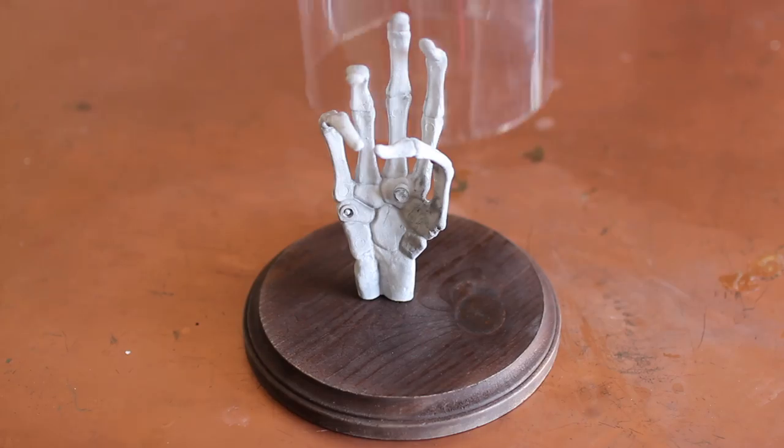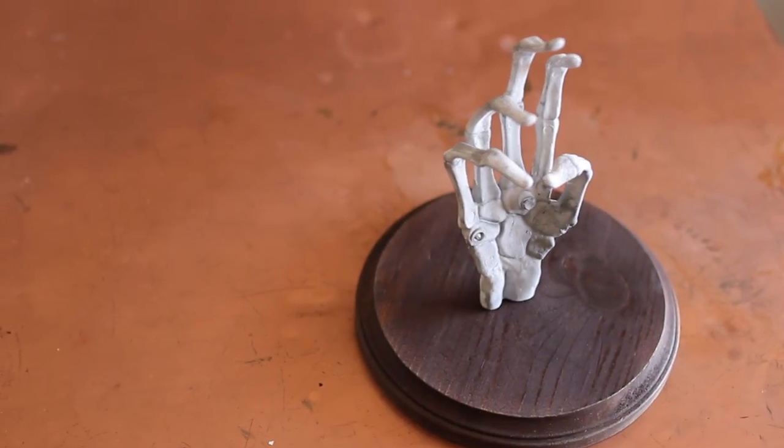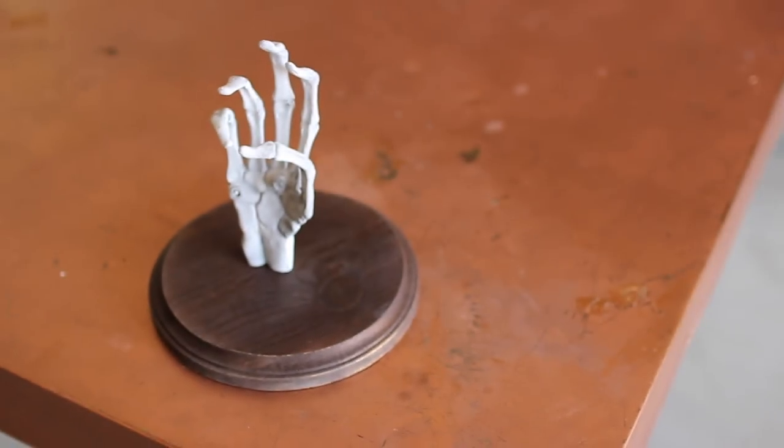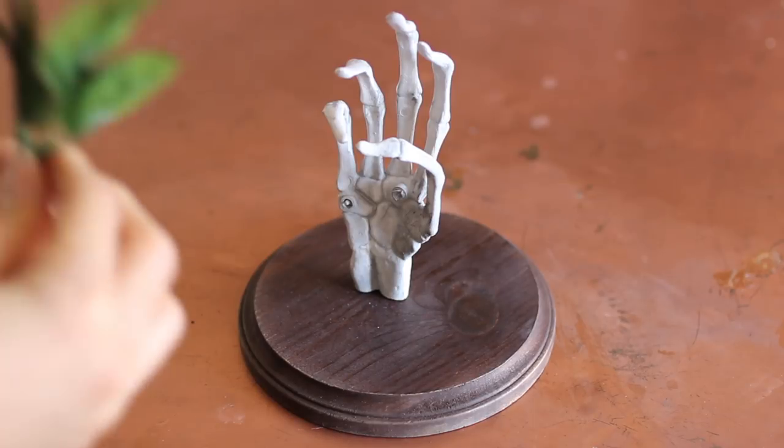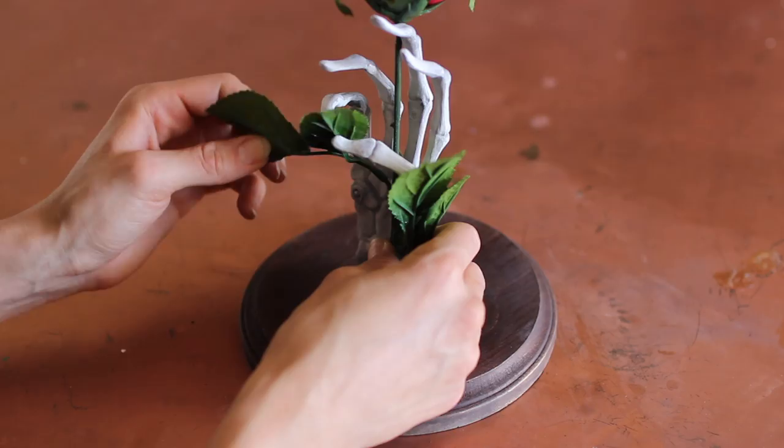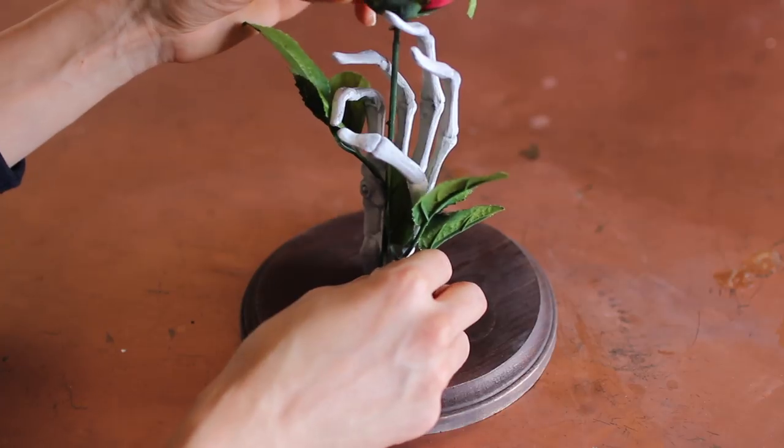You clearly don't have to decorate it with a skeleton hand and a rose. The cloche is done when you make the top and the bottom portion, but I'm going to show you how I added a rose and made this little Halloween decor piece. I actually am making two of these.